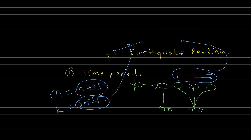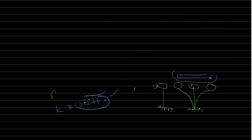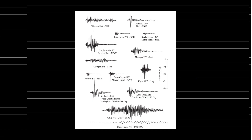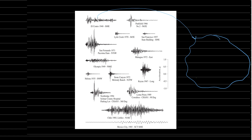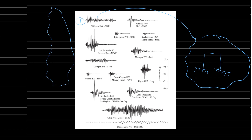Now we will discuss the second point: earthquake. There are different instruments that measure earthquake readings. Suppose there is an area where a major earthquake happened in the past — if you want to build your structure there, you have to refer to that earthquake record. These are readings of earthquake responses measured on devices, capturing maximum displacement, velocity, and acceleration.